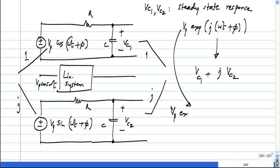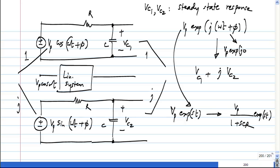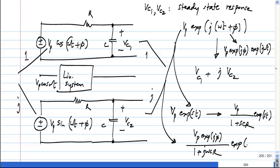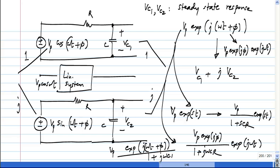What is the response to VP·e^(st)? The steady state response is VP/(1 + sCR) · e^(st). Now VP·e^(st) is nothing but VP·e^(jφ)·e^(jωt), so the solution is VP·e^(jφ) / (1 + jωCR) · e^(jωt), which I can also write as VP·e^(j(ωt + φ)) / (1 + jωCR). The answer I already know — that is the advantage here.